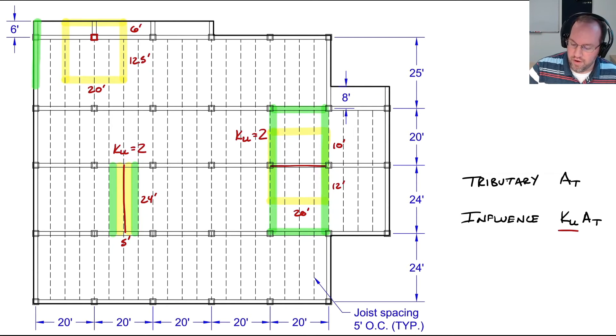For the influence area for the edge column, we see it's this rectangle, and in this case it's not twice as much as our tributary area. We have to calculate this: it's 40 feet in this direction and 31 feet in the north-south direction. The influence area is 1,240 square feet, and dividing by the tributary area of 370 square feet we get a K_LL of 3.35.